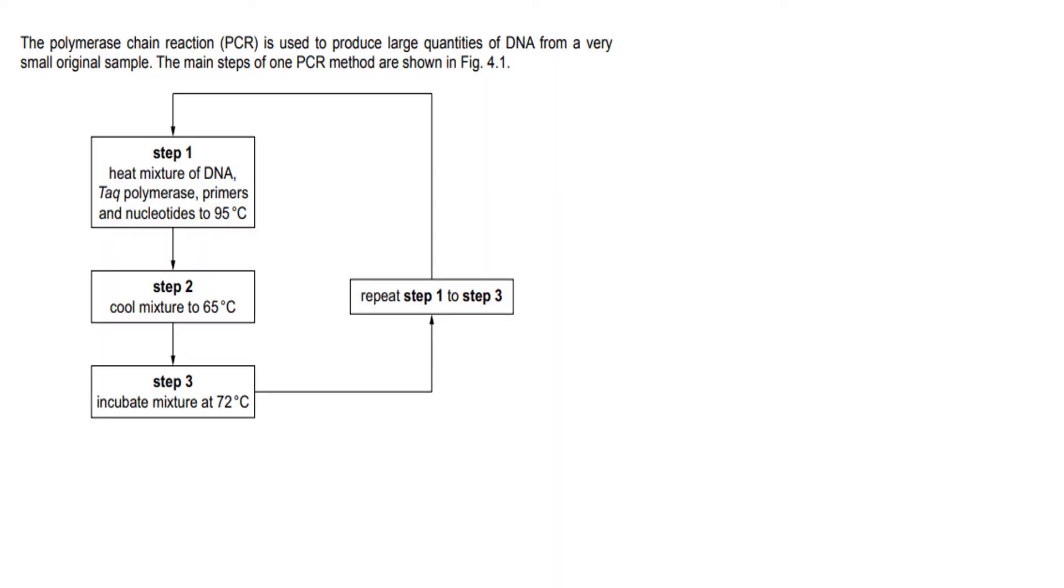Let's look at this. It says the polymerase chain reaction, which is the PCR, is used to produce large quantities of DNA from a very small original sample. The main steps of one PCR method are shown in figure 4.1. Step 1, you heat the DNA mixture, add TAC polymerase, primers, and nucleotides at 95 degrees. Step 2, cool mixture to 65 degrees. And then step 3, incubate at 72 degrees.